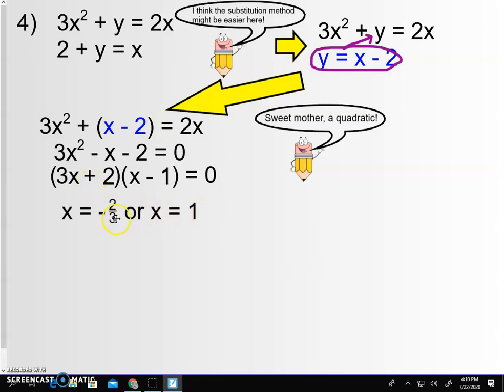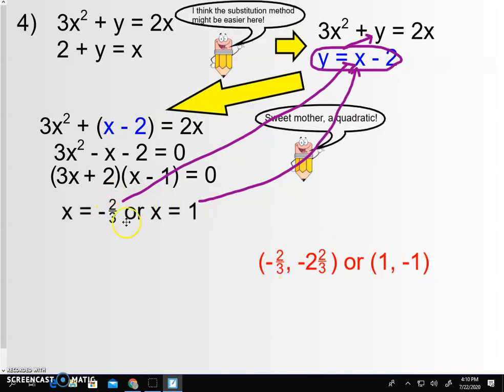So if we know x is negative 2 thirds, I can take that value right there and I can plug it in for x and get the corresponding y. And if x is 1, I can take that and plug it in there and get the corresponding value for y. And that gives us these two answers. Negative 2 thirds gives us that y value. 1 gives us that y value. All right.